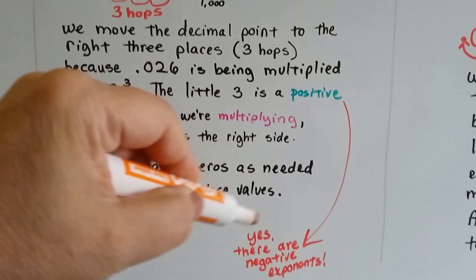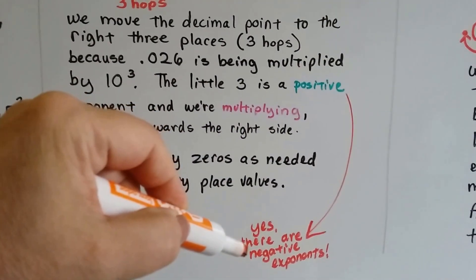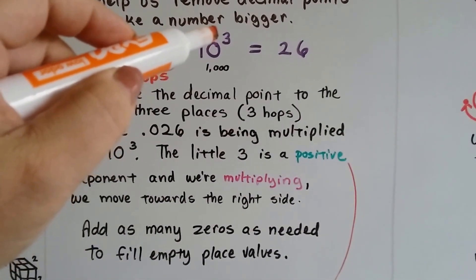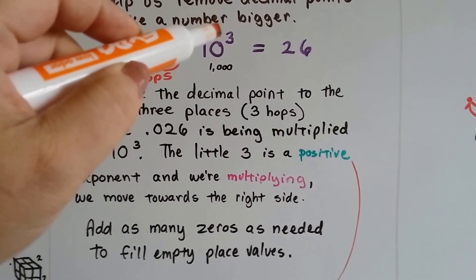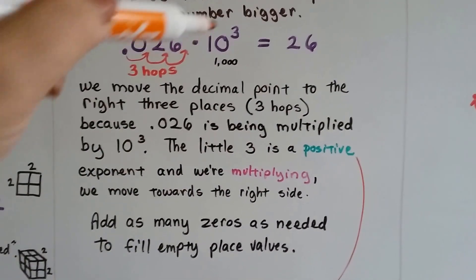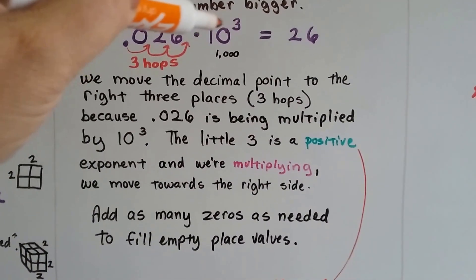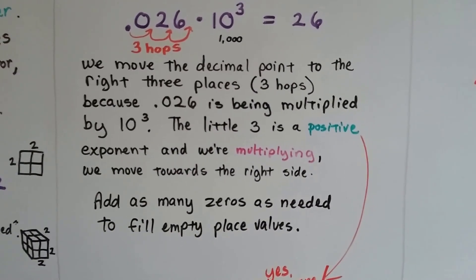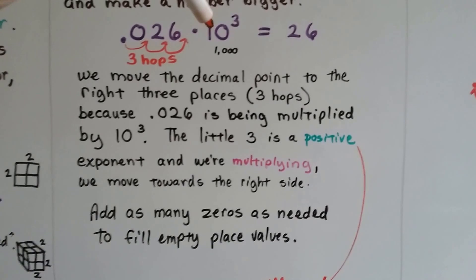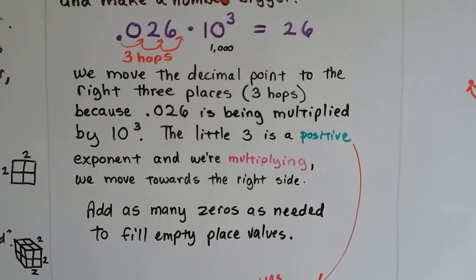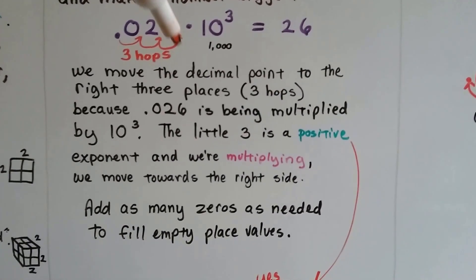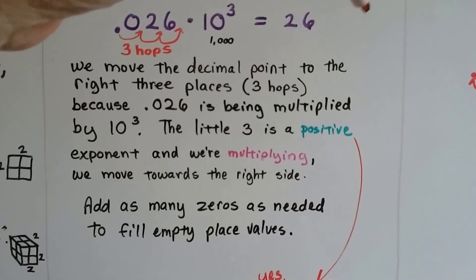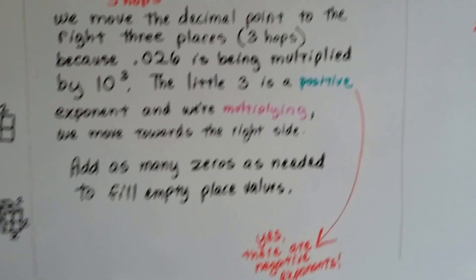The little 3 is a positive exponent and we're multiplying, so we move towards the right. There are negative exponents — this is a positive exponent, and just like positive numbers, we don't write the plus sign in front of it. For negative exponents, we do write a little minus sign. We add as many zeros as needed to fill in the empty place values. If we had multiplied by 10 to the sixth power, we would have gone three more hops and would have had 26,000.